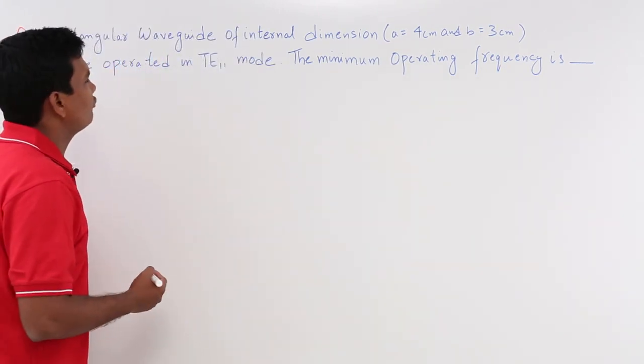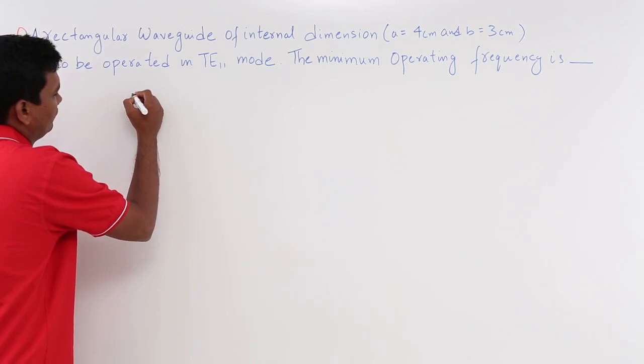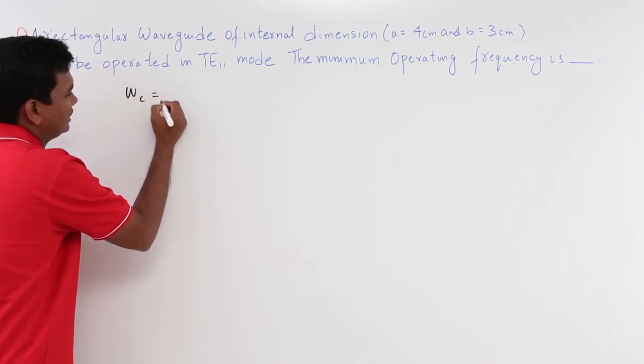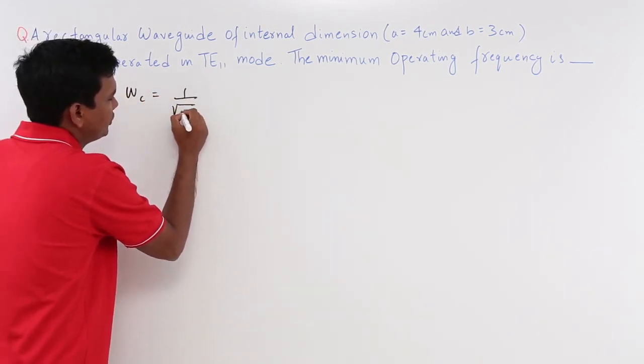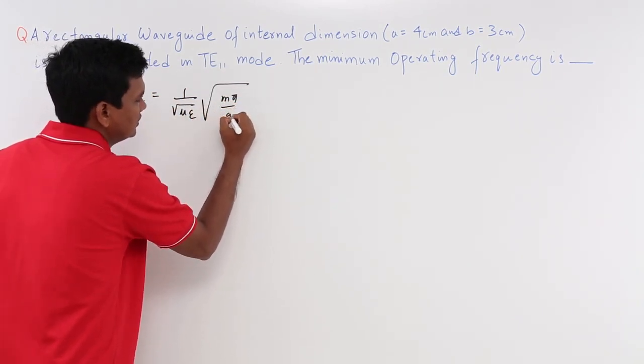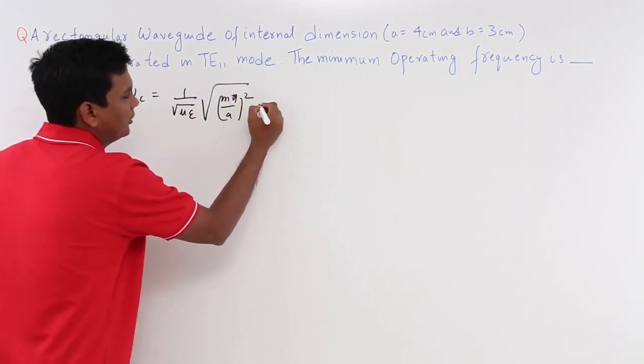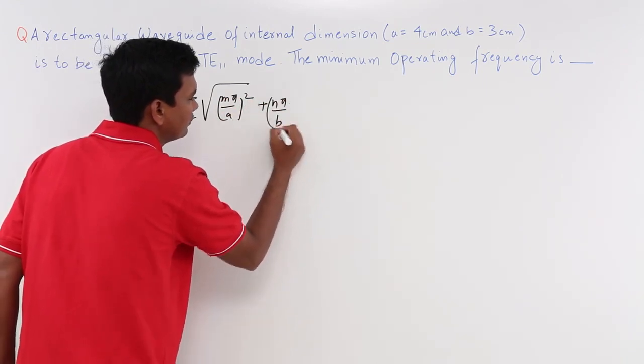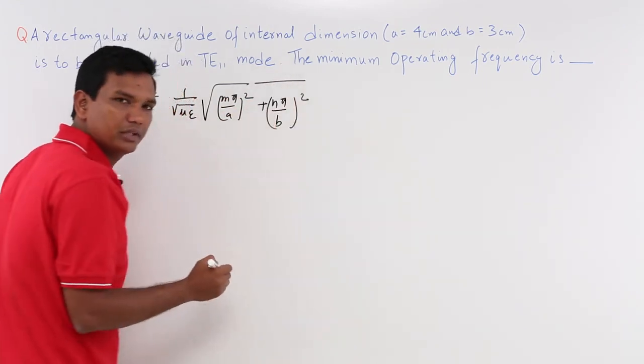So we know that cutoff frequency, omega c, is 1 by mu epsilon, m pi by A the whole square plus n pi by B the whole square.